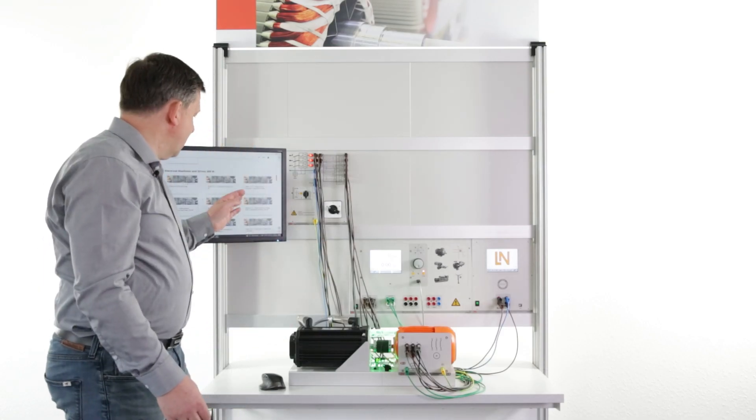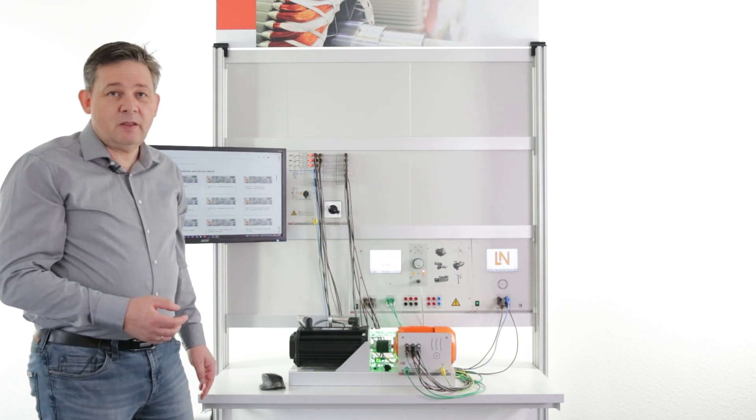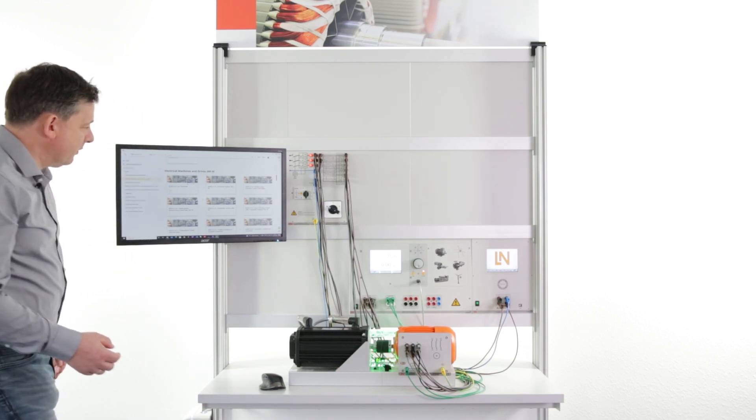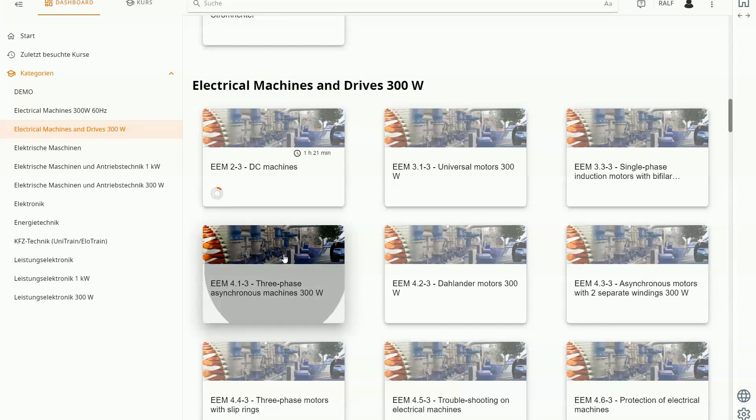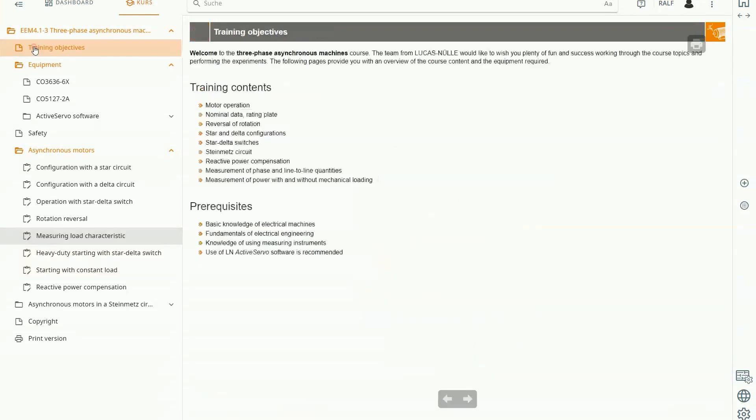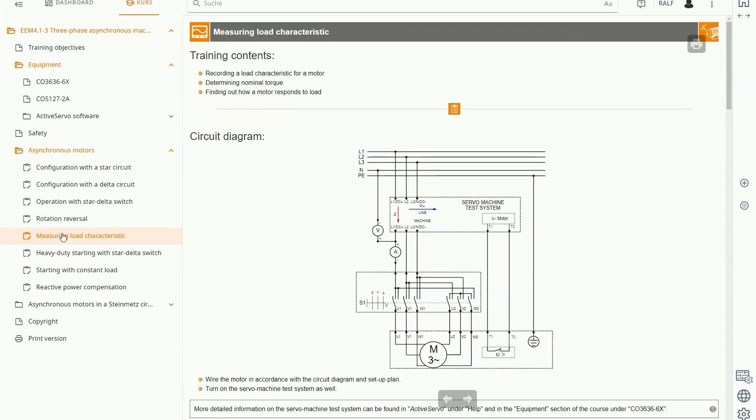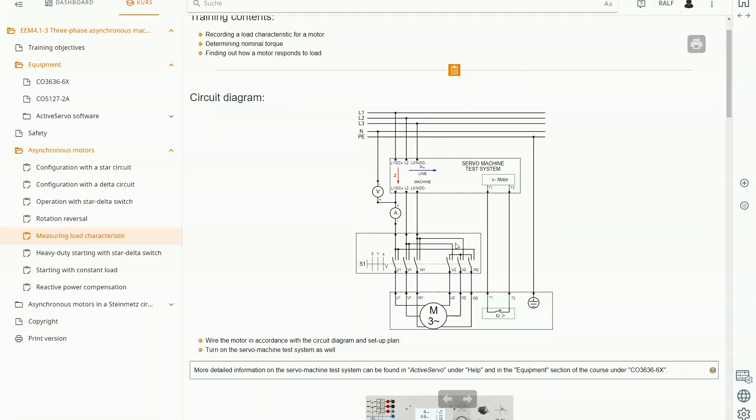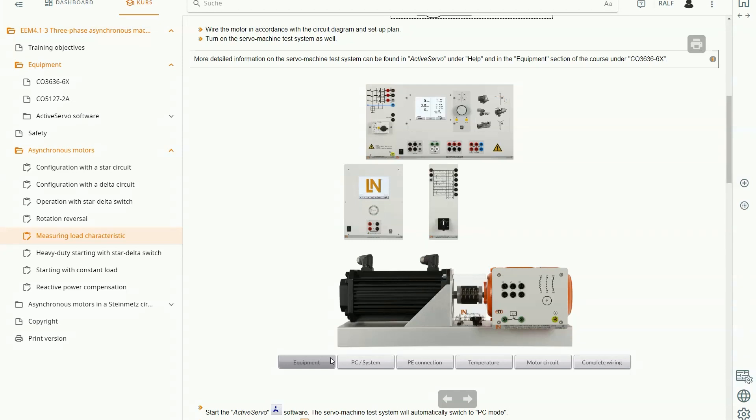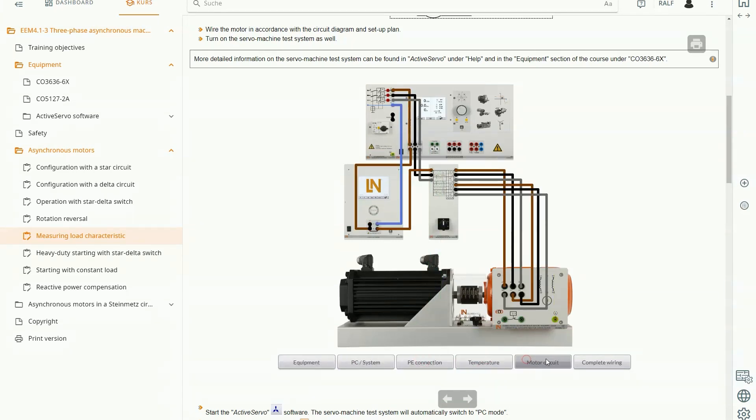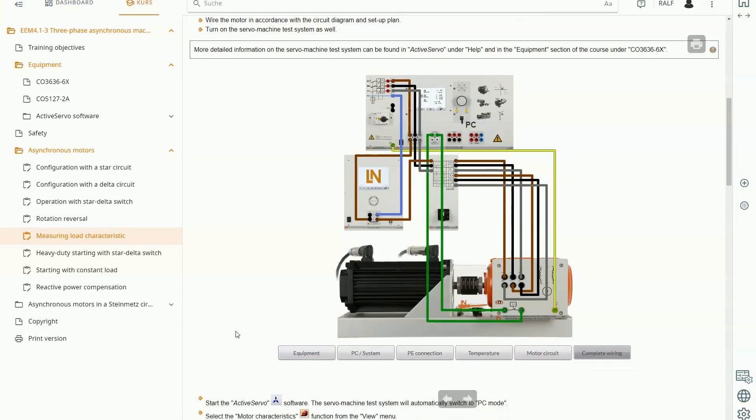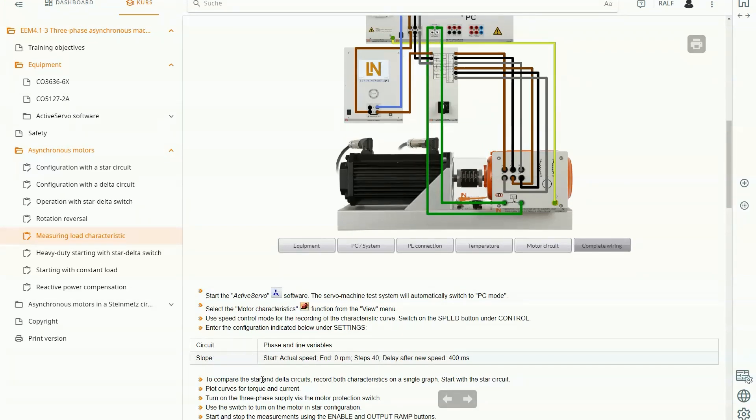Every setup will be supported by a LabSoft course. Just give you a short introduction how our LabSoft courses work. So here we have the LabSoft. Just I will enter to the relevant course. Each course will start with training objectives, then we go to the equipment list to see which equipment is necessary. And then let me go to one experiment—let me go to an experiment where we measure the characteristic of the motor. We start here with a schematic of the wiring followed by an animation which guides you how to set up the complete equipment.